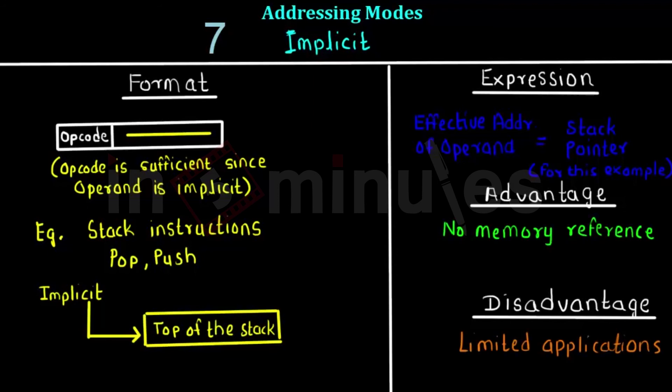The advantage of implicit addressing is that no memory references are required in such instructions. The disadvantage is limited application — this addressing mode can be present for only certain instructions, like stack instructions or other specific instructions where registers or operands are implicit, so it has very limited applications.